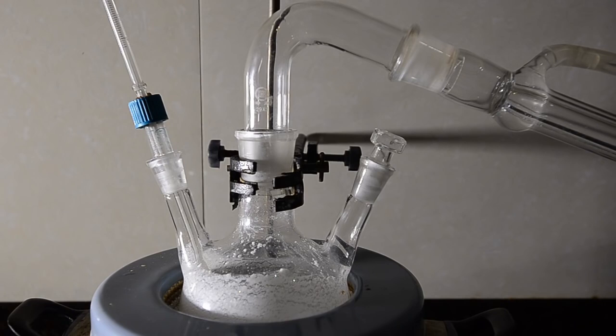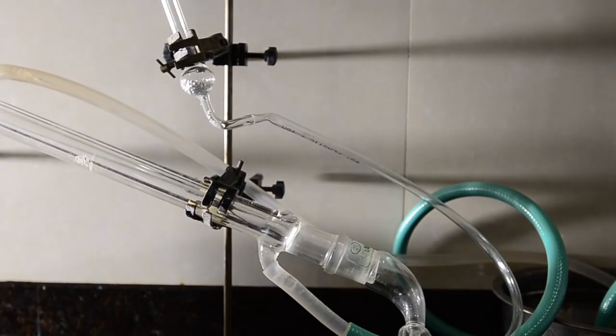Now set up for simple distillation. We're going to distill off all liquid so a thermometer in the still head isn't necessary. We've used a calcium chloride drying tube to protect the distillate.